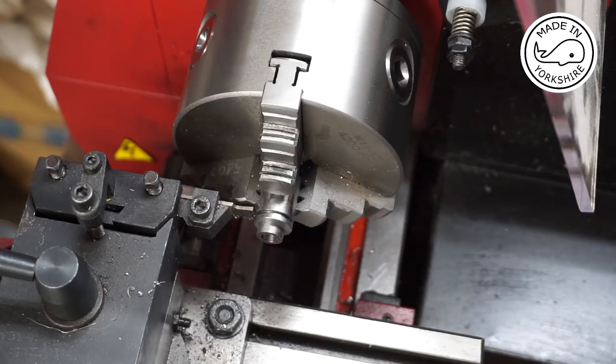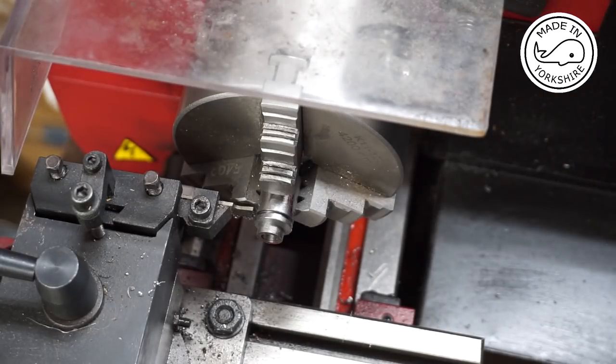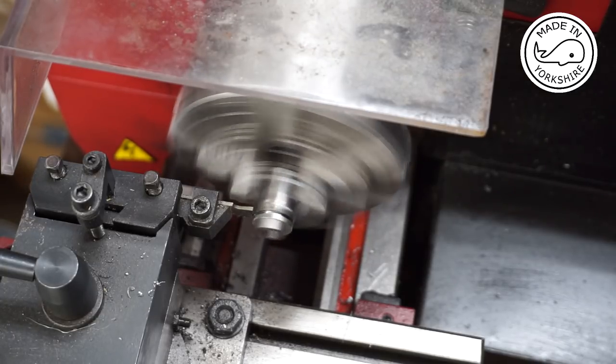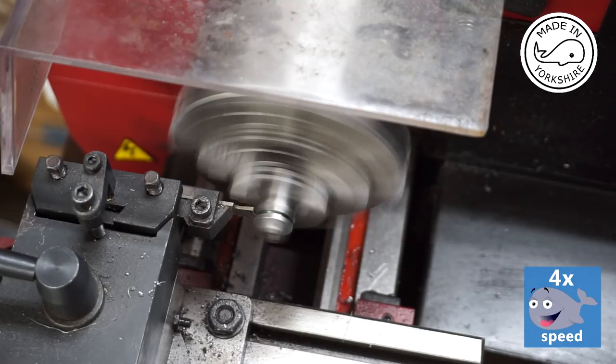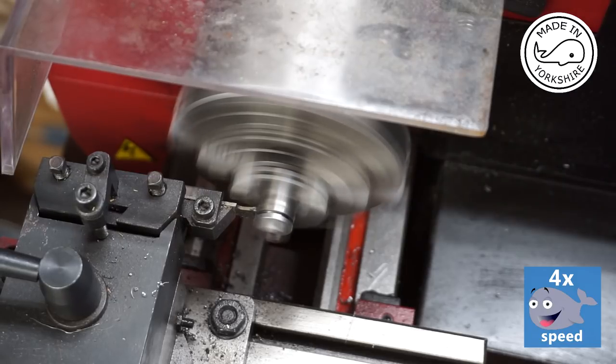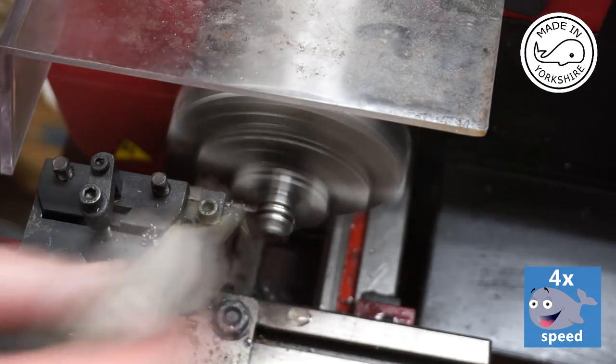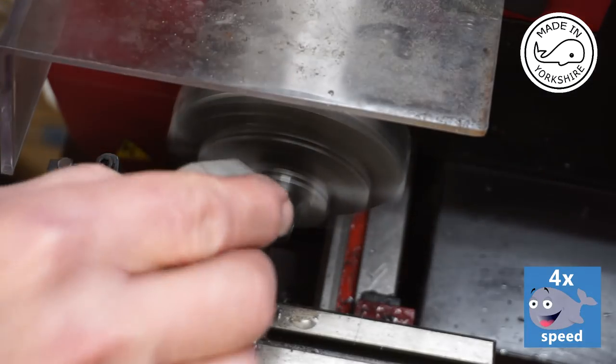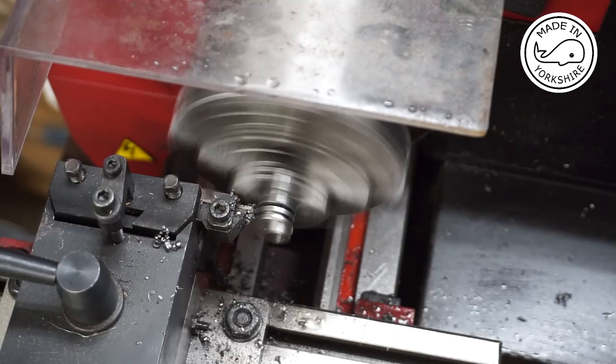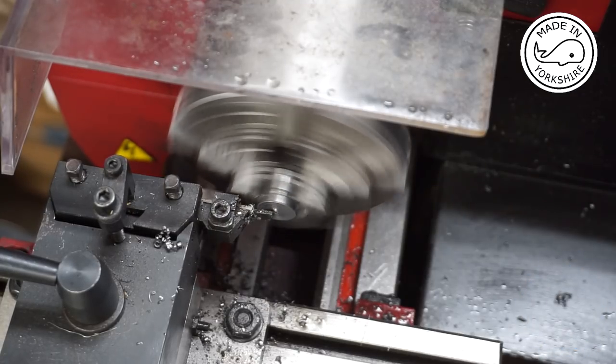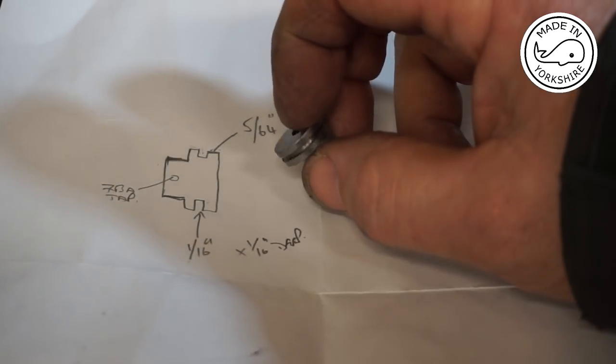We're now parting off so I'll be cutting around about 600 rpm and I'll be using the power feed on the cross slide.